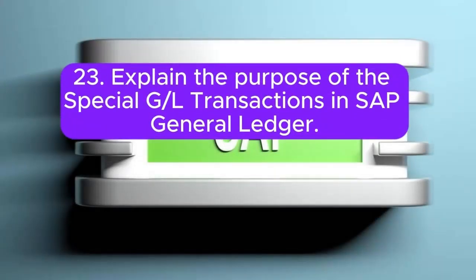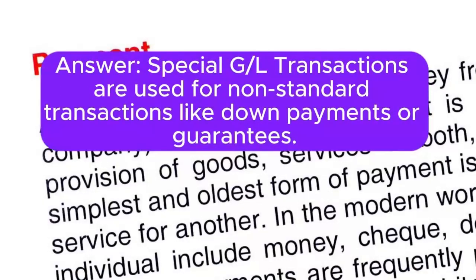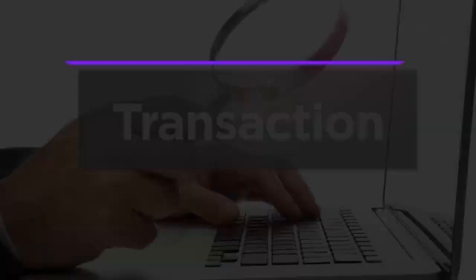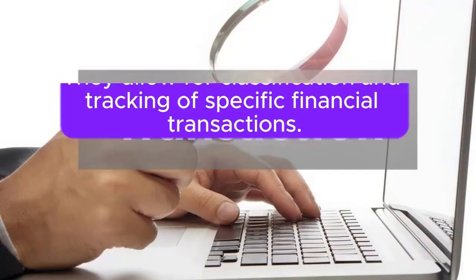Question 23: Explain the purpose of the special General Ledger transactions in SAP. Answer: Special General Ledger transactions are used for non-standard transactions like down payments or guarantees. They allow for classification and tracking of specific financial transactions.